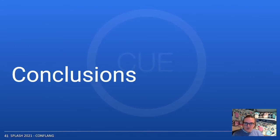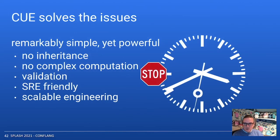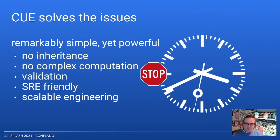In conclusion, large-scale configurations as implemented with GCL resulted in a lot of issues, but in CUE we solve these issues. CUE is remarkably simple yet very powerful. It has no inheritance, no complex computation, it has validation, it's SRE-friendly, and it allows for scalable engineering. Because of its simplicity, we think it's actually perfectly suitable for simple applications as well. The idea is that it can grow all the way from zero to nine o'clock on the complexity clock, but then stop right there because it actually implements the requirements we set out for GCL and that we generally need for good configuration languages.